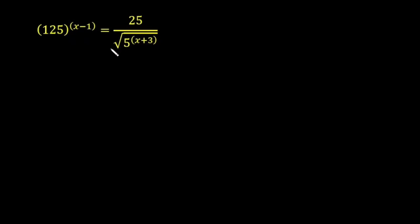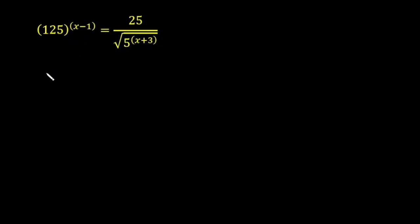Before I move on, don't forget to subscribe to this channel and like this video. Now let us solve this problem. When I see this equation, there is a square root at the denominator — 5 raised to the power x plus 3, under the square root. I would like to eliminate this denominator, so I will multiply the whole equation by the square root of 5 raised to the power x plus 3.